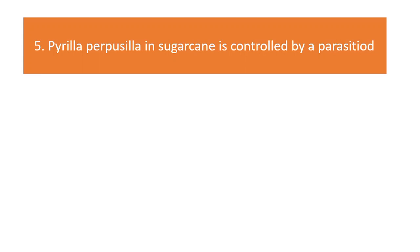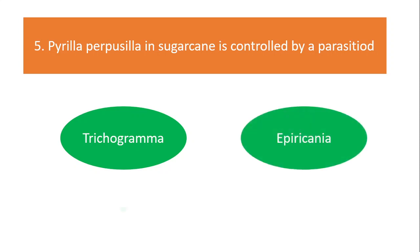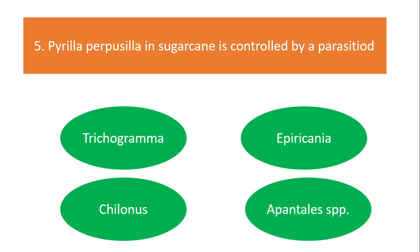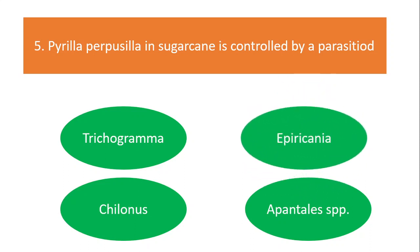Pyrilla purpusilla in sugarcane is controlled by which parasitoid? Options are Trichogramma, Epirichania, Chilonas, or Apanteles species. The answer is Epirichania.